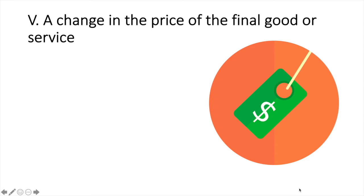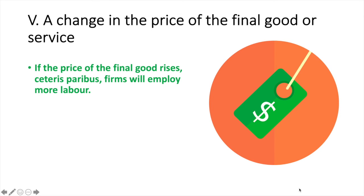Fifth, is the impact of a change in price of the final good or service. If the price of the final good rises, ceteris paribus, firms will employ more labour. If the price of the final good falls, ceteris paribus, firms will employ less labour.